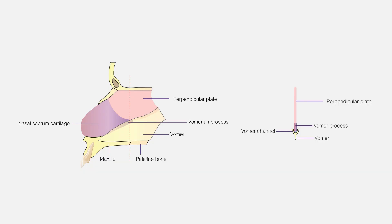The nasal septum is made from a cartilage part and a bony part. The bony part is a combination of the vomer and the perpendicular plate of the ethmoid. Nasal septum deviation is a very common problem. The etiology of nasal septal deviation is considered to be either genetics, trauma, or sometimes maxillary deficiency.